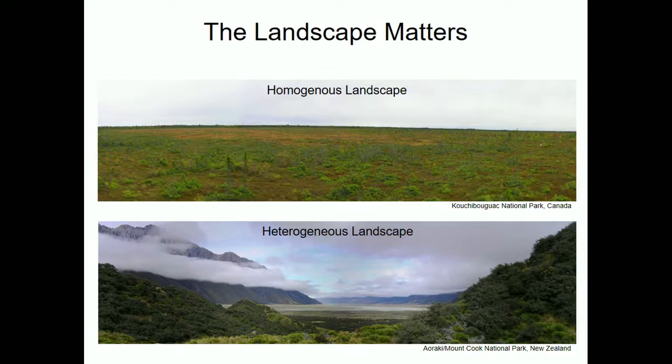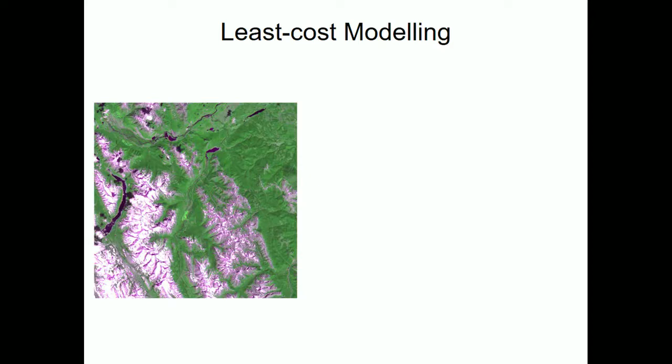We can probably guess that animals and organisms behave similarly — there will be fairly generic simple rules we can incorporate to build a more nuanced idea of how distant things are. The method is called least cost modeling, found in most GIS packages and quite accessible.